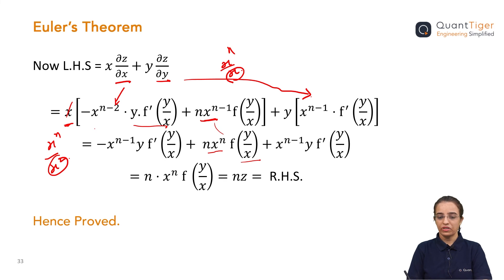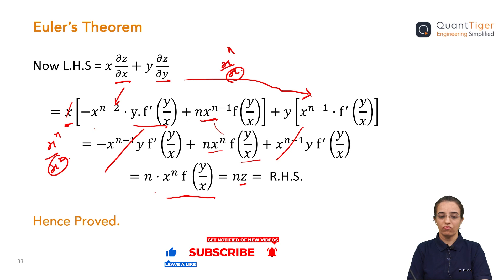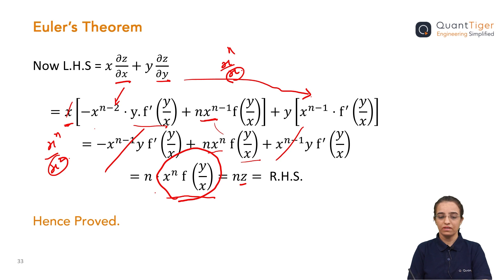If you look here, the first term and the last term are exactly the same except for sign — one is negative and one is positive — so they cancel out. We are left with n · x^n · f(y/x), which is nothing but n·z. This is because we represented the homogeneous function as z = x^n · f(y/x) from the start. That is how we have proved Euler's theorem.